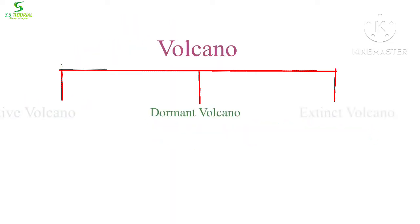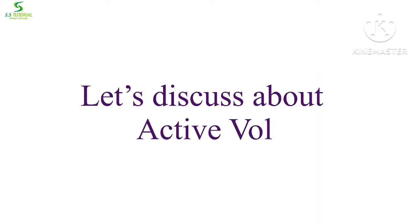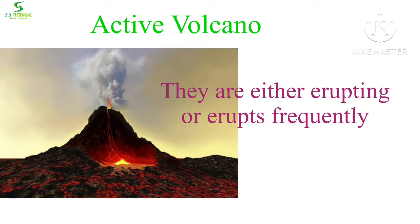Now let's know the types of volcano in terms of activity. There are three types: active volcano, dormant volcano, and extinct volcano. Active volcanoes are those which are either currently erupting, have erupted frequently, or will erupt in the near future.